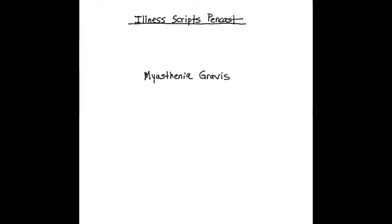Hey guys, welcome back to Illness Scripts Pencast. Today we are going to talk about myasthenia gravis. Myasthenia is an autoimmune, antibody-mediated disorder whereby the acetylcholine receptors located on the postsynaptic neurons of muscle endplates are disrupted or destroyed.